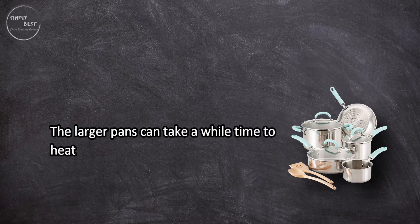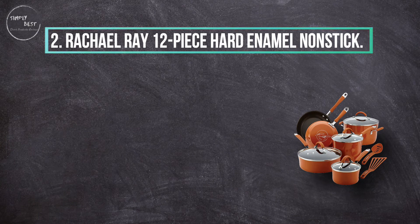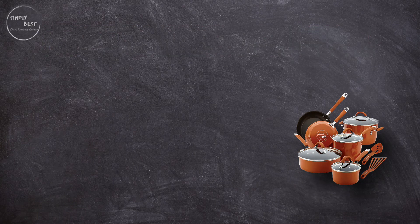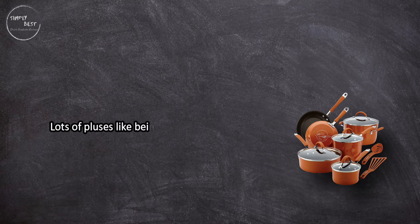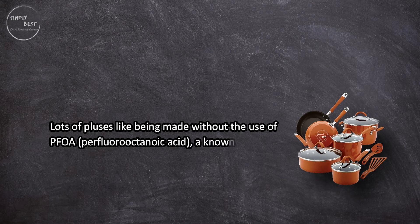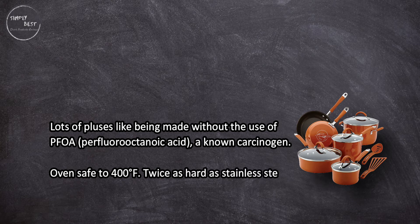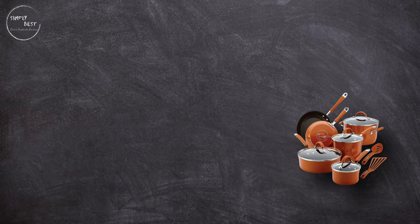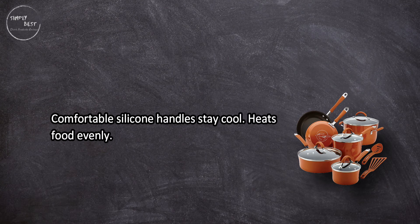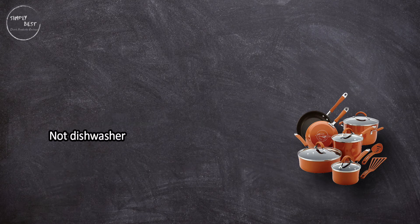At number two, Rachael Ray 12-piece hard enamel nonstick. Lots of pluses like being made without the use of PFOA (perfluorooctanoic acid), a known carcinogen. Oven safe to 400 degrees Fahrenheit, twice as hard as stainless steel. Comfortable silicone handles stay cool, heats food evenly. A wide assortment of pots, pans, and everyday utensils. Not dishwasher safe. The large pans are on the heavy side.